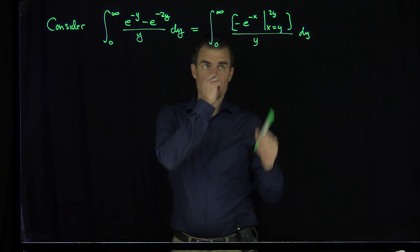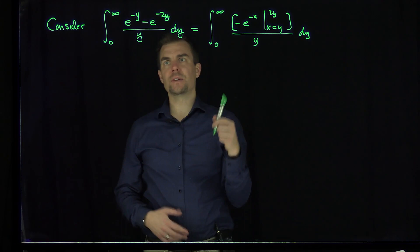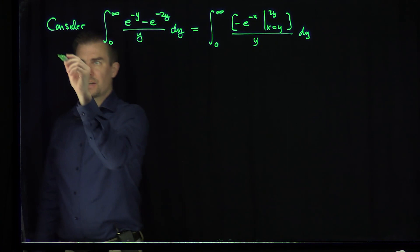So if we recognize the numerator as an expression like that, as an ordinary antiderivative, let's check to make sure this works. I have -e^(-2y), and then the bottom line is negative, so I'm going to have +e^(-y). Great.